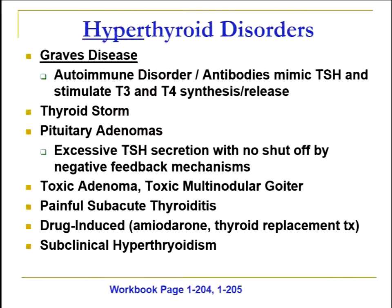We're going to start with hyperthyroidism, focusing on Graves' disease, which is probably the more common disorder you'll see. This is an autoimmune disorder where the body naturally stimulates T3 and T4 synthesis and release by mimicking TSH through antibodies, causing way too much T3 and T4. Other causes covered in the workbook include thyroid storm, pituitary adenomas, subacute thyroiditis, and drug-induced hyperthyroidism — amiodarone being notorious for causing either hypo- or hyperthyroidism.